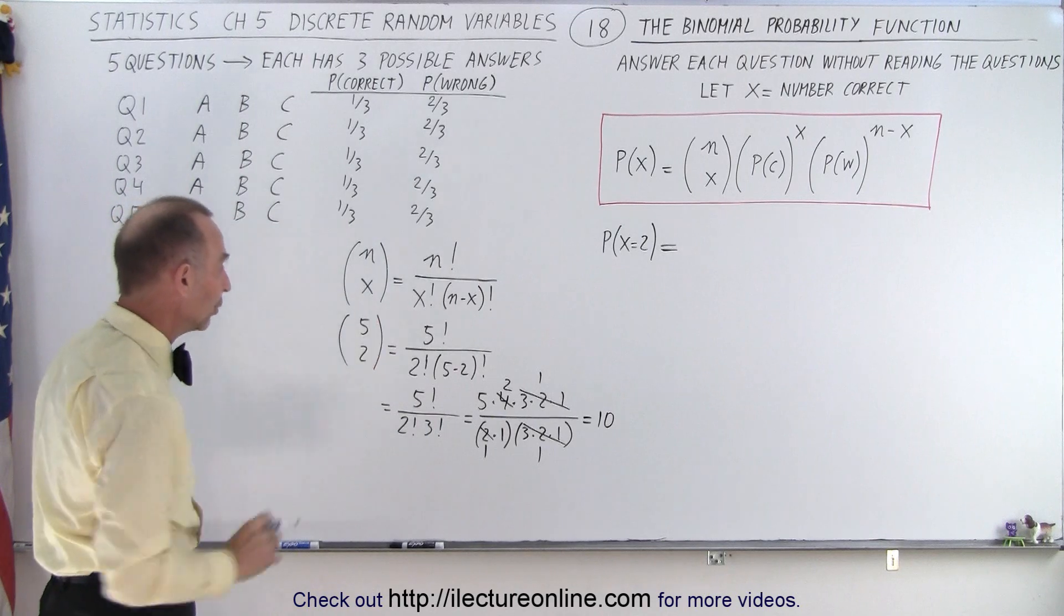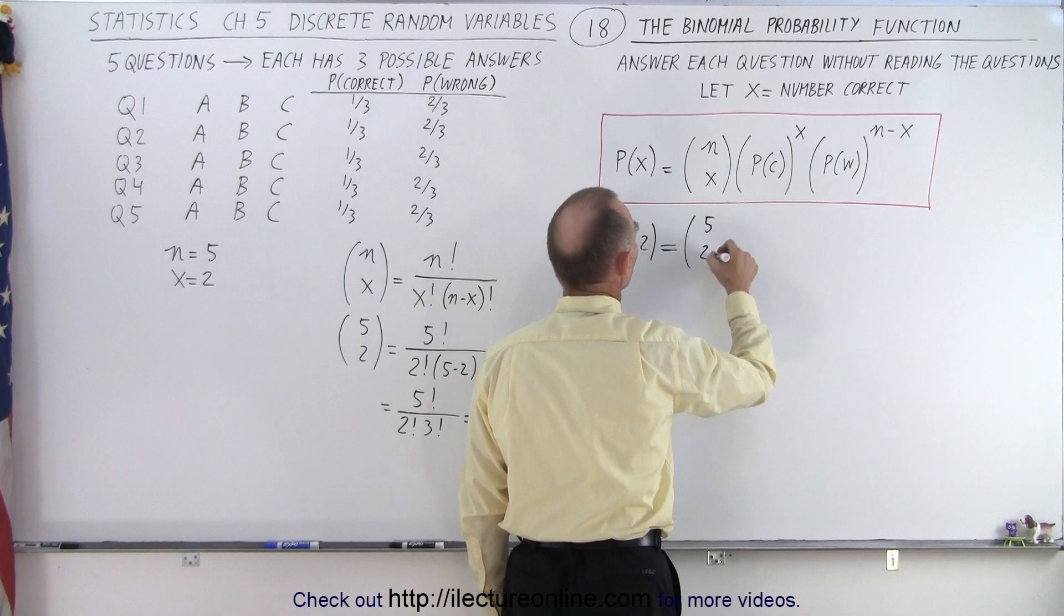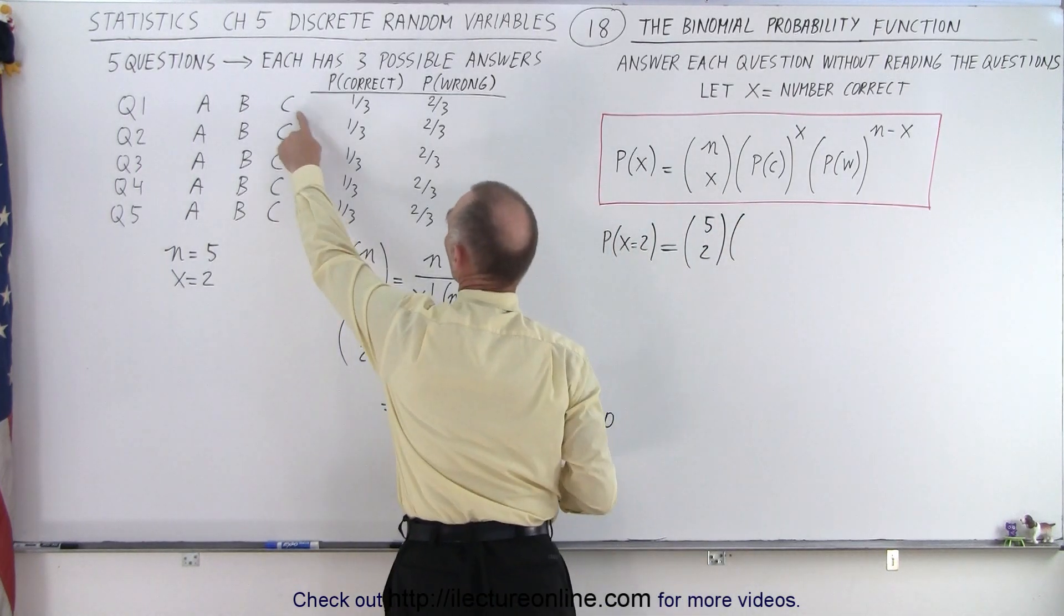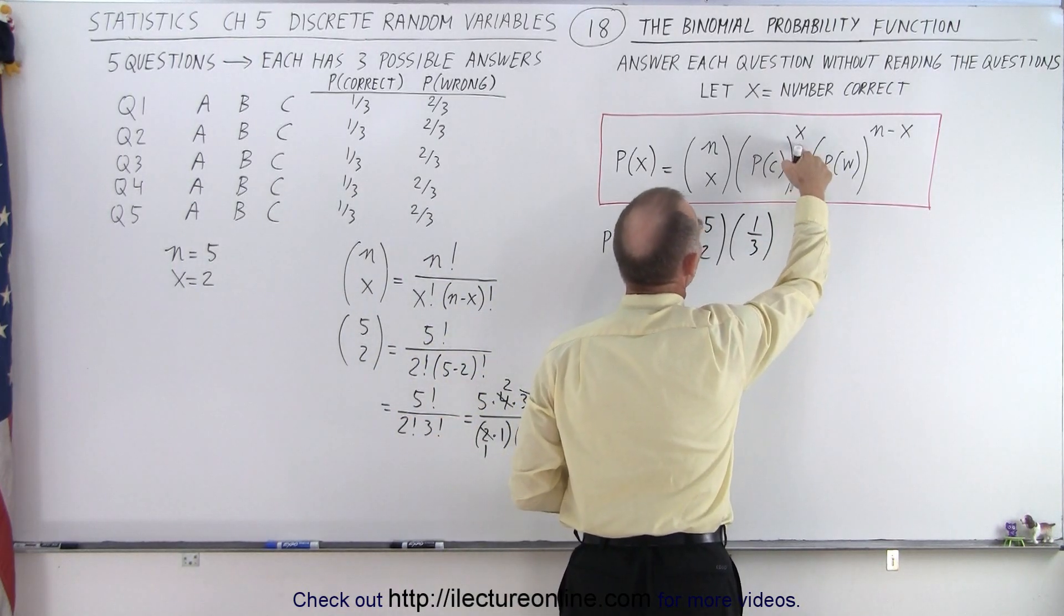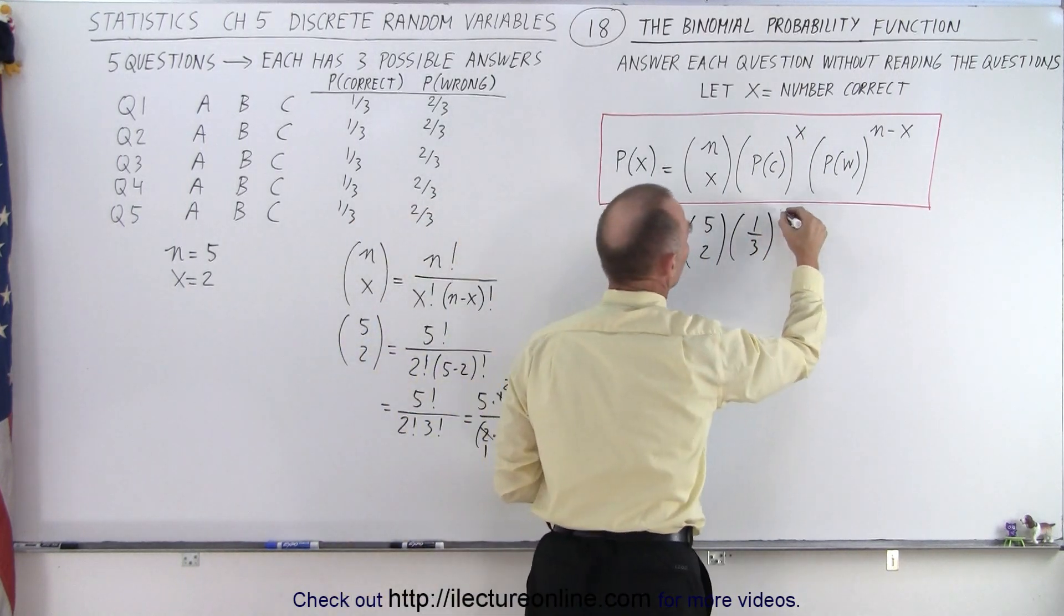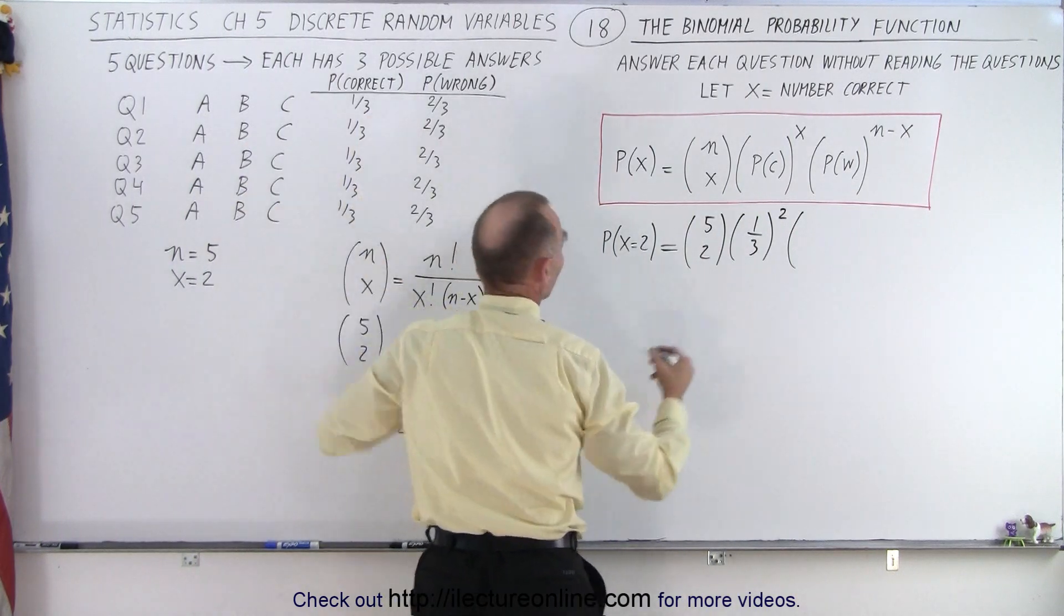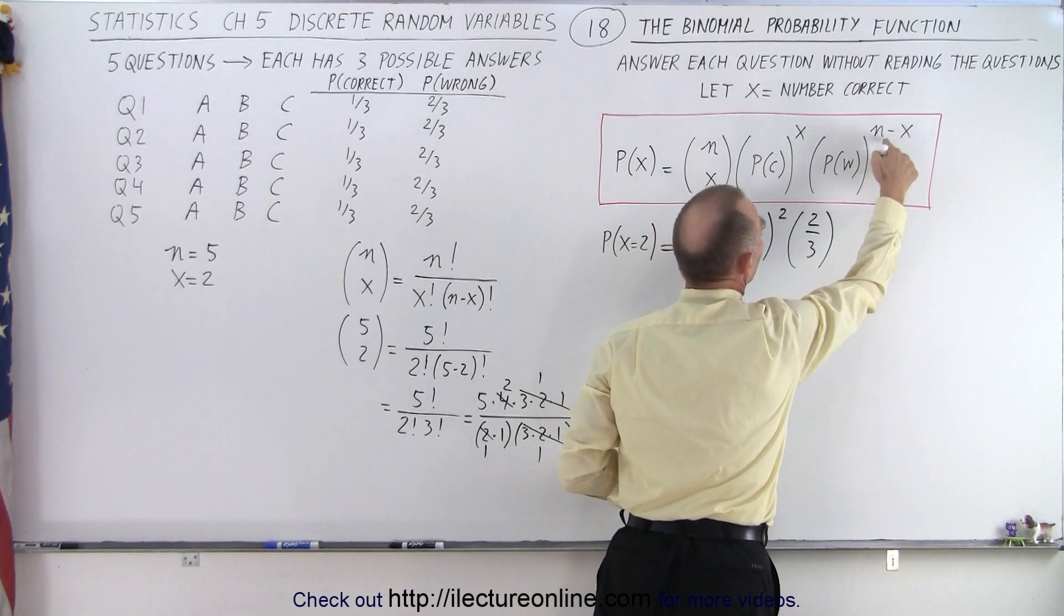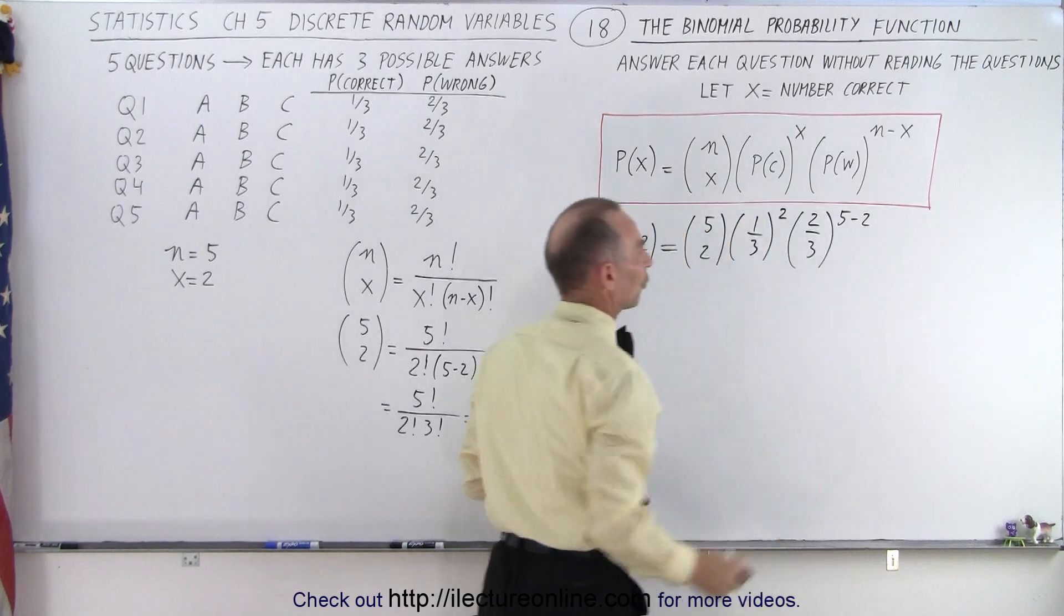Now we apply that over here. Notice in this case, we're going to have this as (5 choose 2). Here we have the probability that we have a correct answer in each of the five questions, which is one-third, and we raise that to the x power. x is the number correct. We're looking for x equals two, so that's the second power. The probability that we'll get the wrong answer in any of the questions is two-thirds, and we're going to raise that to the n minus x power. In this case, that would be five minus two power, or to the third power.